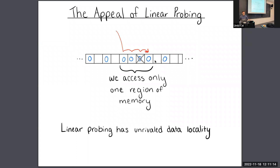Audience question on hash functions: theoretically, five-wise or six-wise independence suffices, and tabulation hashing also works. From a practical perspective, any hash function works — XOR-based hash functions, or AX plus B mod M. For our purposes in this talk, we'll just assume the hash function is fully random, though there is a large literature on designing hash functions that work well with this data structure.